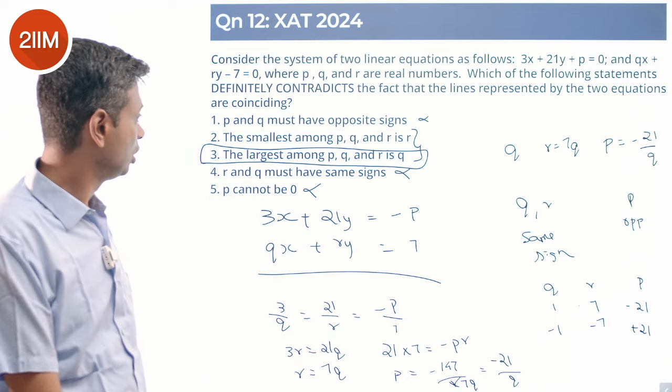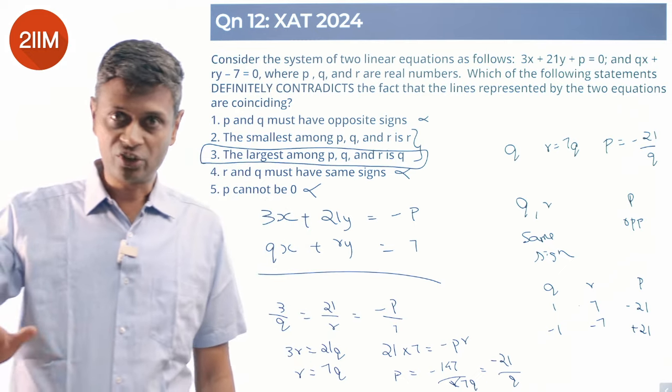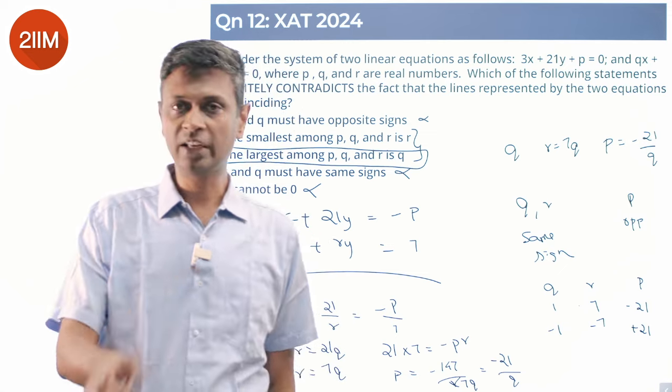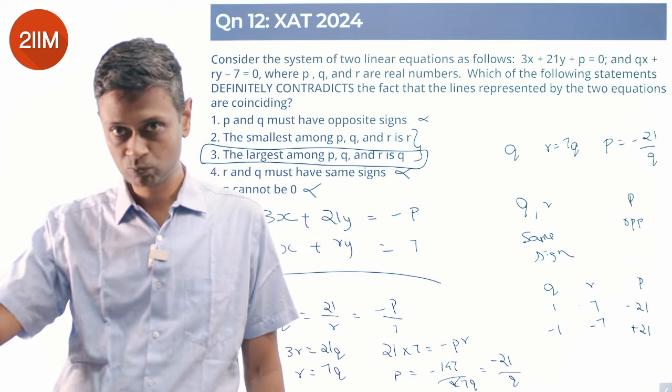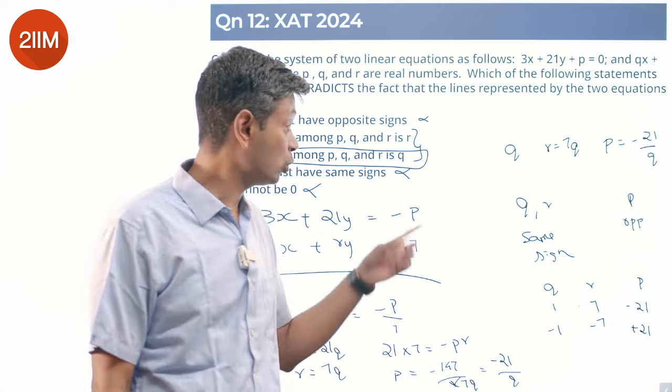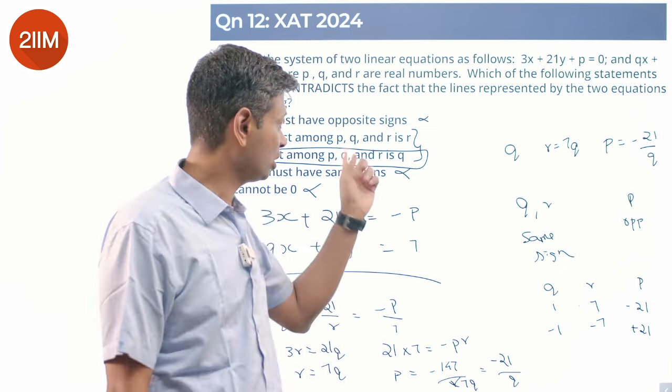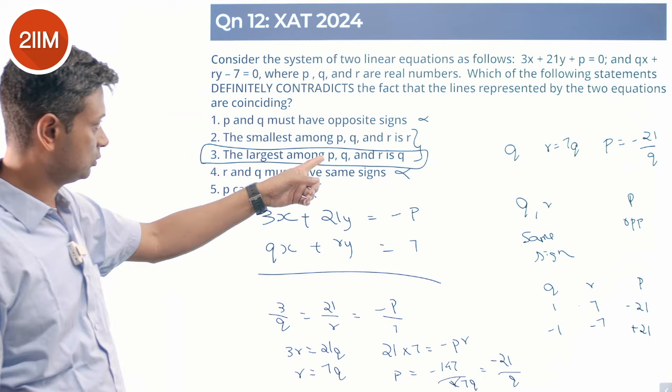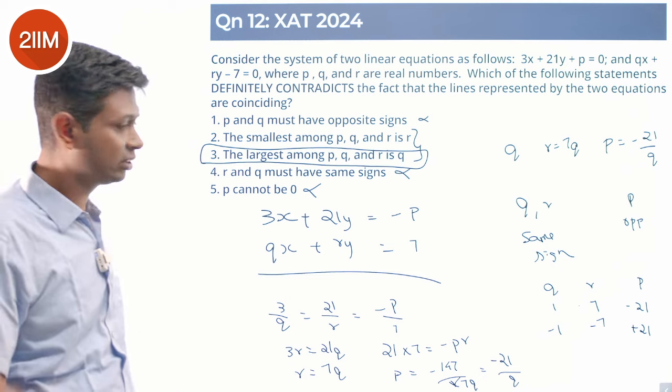As it turns out, q cannot be the largest. If q is positive, r is higher. If q is negative, p is higher. So both cases, q is not the largest. So if q were the largest of the three numbers, then this will be contradicted. So choice 3.